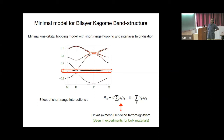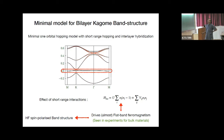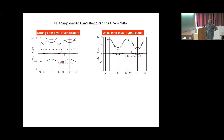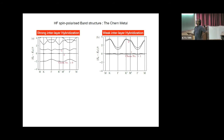It is known that a partially filled flat band with interactions drives flat-band ferromagnetism, which is what is observed in experiments for bulk bilayer kagome materials. One can capture this using a Hartree-Fock calculation, which yields a spin-polarized band structure. When interlayer hybridization is strong, both Chern bands have Chern number +1; when hybridization is weak, the Chern band at the Fermi level has Chern number +2. I'll flash results for both cases.